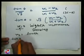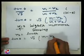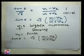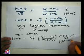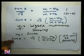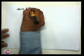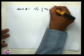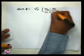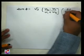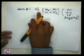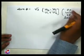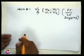So tan φ = √3·(W1 - W2)/(W1 + W2) when the power factor is leading. In the last lecture we derived the equation tan φ = √3·(W2 - W1)/(W1 + W2) when the power factor is leading. So it becomes: tan φ = √3·(W2 - W1)/(W1 + W2) when the power factor is leading — this equation was derived in the last lecture.